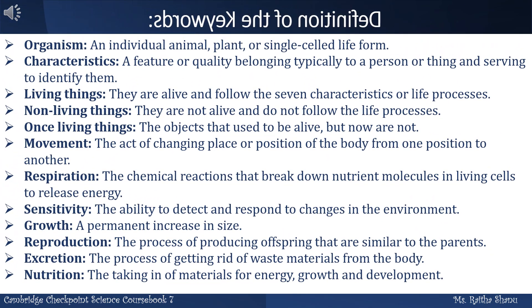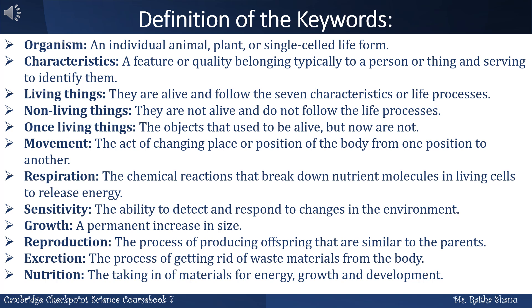Definition of the Keywords. Organism: an individual animal, plant, or single-celled life form. Characteristics: a feature or quality belonging typically to a person or thing and serving to identify them. Living Things: they are alive and follow the 7 characteristics or life processes. Non-living Things: they are not alive and do not follow the life processes. Once-living Things: objects that used to be alive, but now are not. Movement: the act of changing place or position of the body from one position to another.